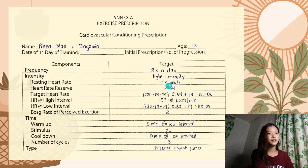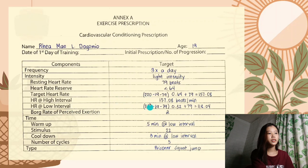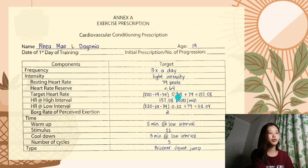Adding back 79, my resting heart rate, gives me 157.08 beats per minute as my target heart rate. Next is the heart rate at low interval, calculated the same way: 220 minus my age, minus resting heart rate, multiplied by 0.32 — which I got by dividing 0.64 by 2 — plus 79, equals 118.04.